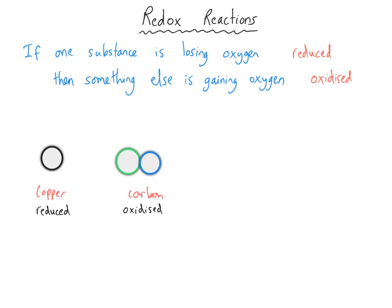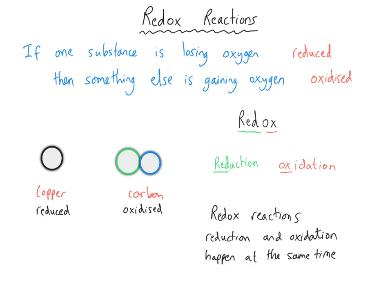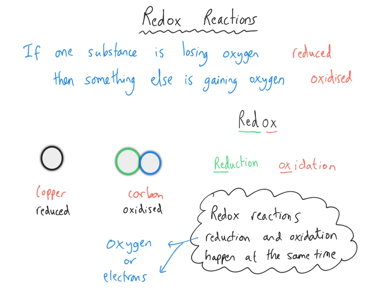Because reduction and oxidation have both happened at the same time — simultaneously — we use the term redox, which is a portmanteau combining the 'red' from reduction and the 'ox' from oxidation. This happens when oxygen is lost or gained, but it also happens when electrons are lost and gained at the same time, because if one substance is losing electrons, another must be gaining them — electrons are too small and reactive to exist by themselves.